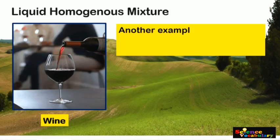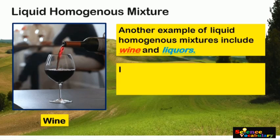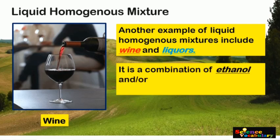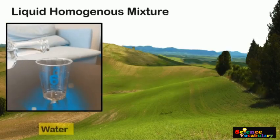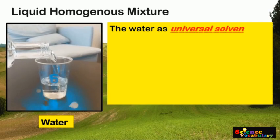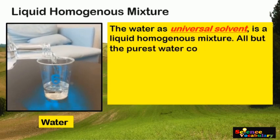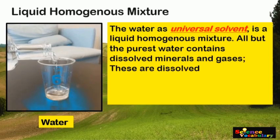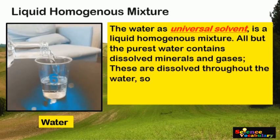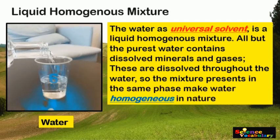Another example of liquid homogeneous mixtures includes wine and liquors. Wine and liquors are a combination of ethanol and water as a solvent with a dissolved substance. Water is also a liquid homogeneous mixture — as the universal solvent, all but the purest water contains salts, minerals, and gases dissolved throughout, making water homogeneous in nature.